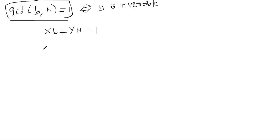All you have to do now is take mod n on both sides. What it means now is that x times b is equal to one mod n, because y times n when you do mod n will go away to zero because it's a multiple of n. So x times b is congruent to one mod n.